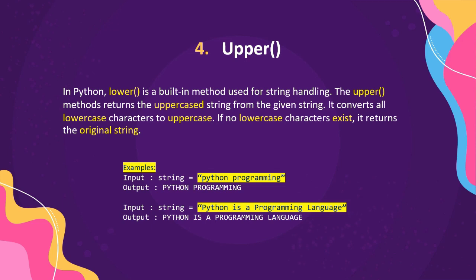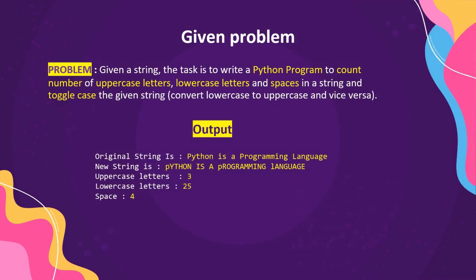The output using upper will be 'PYTHON PROGRAMMING' — all characters converted to uppercase. For another example, 'Python programming is a language' has the first letter of the first word capitalized and the rest lowercased. Applying upper will convert all lowercase characters to uppercase; the already-uppercase character remains uppercase. That covers the upper method.